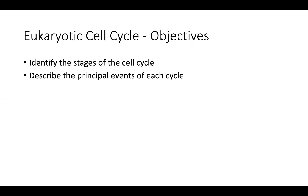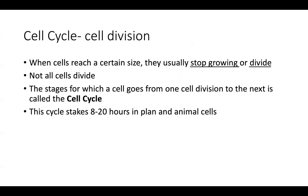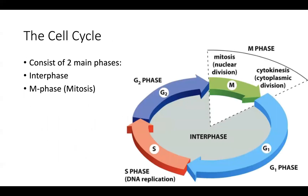We want to identify the stages of the cell cycle and describe the principal events — what's taking place at each stage. Cell division is something that happens; our cells do not necessarily grow indefinitely. When cells reach a certain size, they usually stop growing, divide, or die. Not all cells divide, but those that do undergo a process known as the cell cycle. The stages through which a cell goes from one cell division to the next — we call that the cell cycle. The cell cycle can take anywhere from eight to twenty hours in plant and animal cells. The cell cycle consists of two main phases: interphase and M phase.